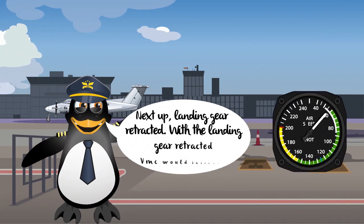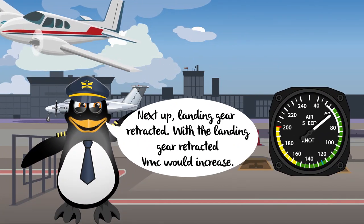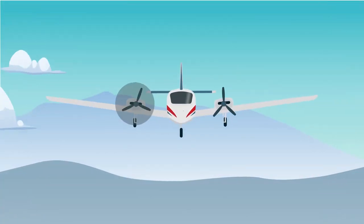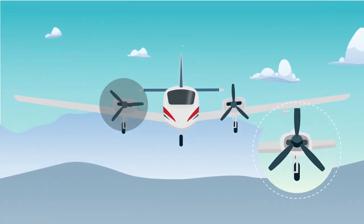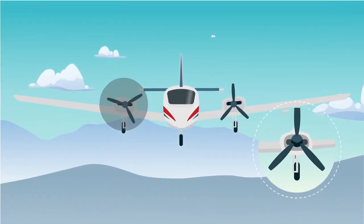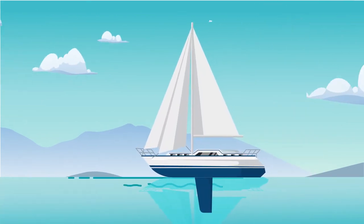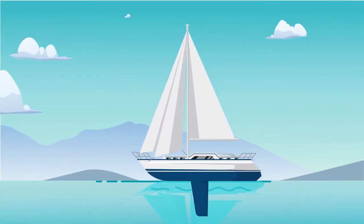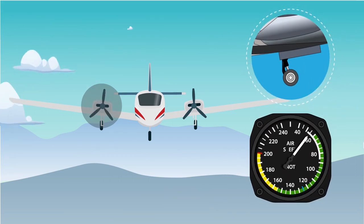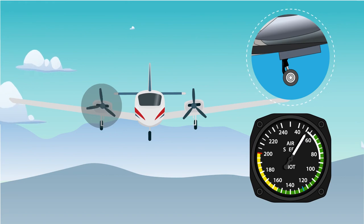Next up, landing gear retracted. With the landing gear retracted, VMC would increase. If we look at the landing gear extended, the landing gear aids directional stability — picture a keel of a boat in the water; it helps keep the boat stable and upright. A similar effect takes place with the landing gear extending, which tends to decrease VMC.